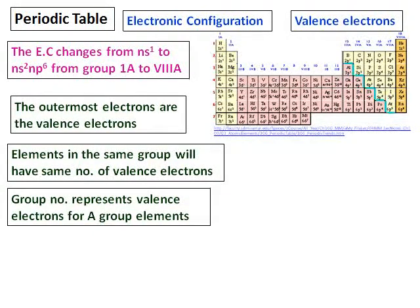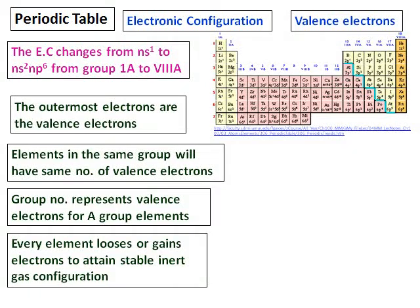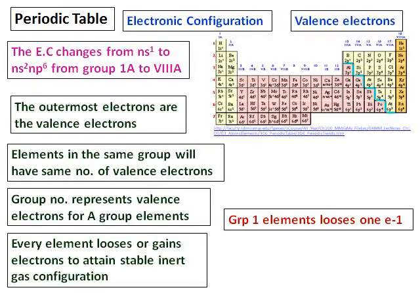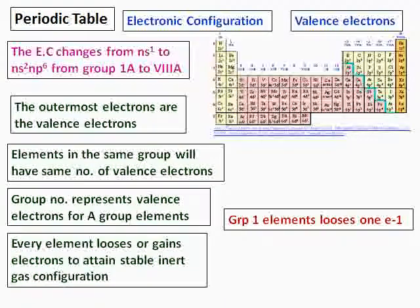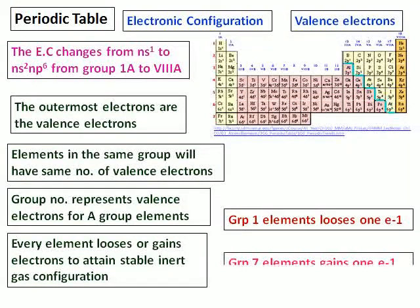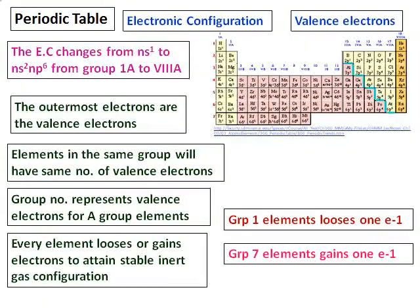Another important thing is every element loses or gains electrons to attain stable inert gas configuration. Group 1 elements need to get the stable inert gas configuration. The best way to get that is to lose one of the extra electrons and it will get the inert gas configuration. For example, sodium with the outer electronic configuration of 3s¹ will lose that electron and get the electronic configuration of neon.